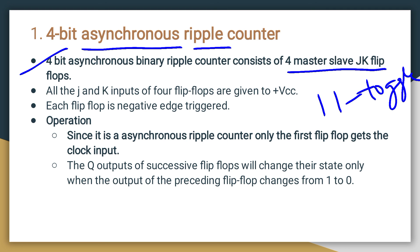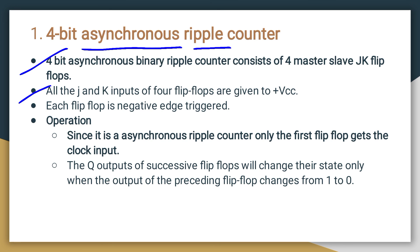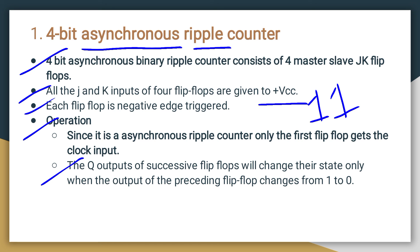For the master-slave JK flip-flop, when both inputs are high, the output toggles. All four JK flip-flop inputs are connected to +Vcc — meaning the inputs are always 1, maintaining toggle condition. Each flip-flop is negative-edge triggered. Since it is an asynchronous ripple counter, only the first flip-flop gets the clock input; the remaining flip-flops wait for the output of the preceding flip-flop to change their state.